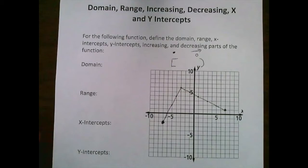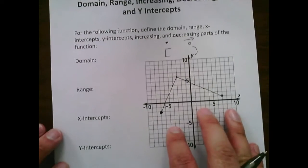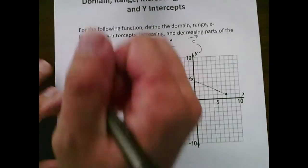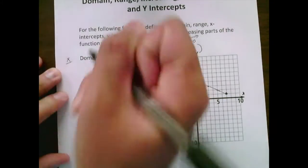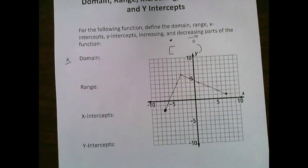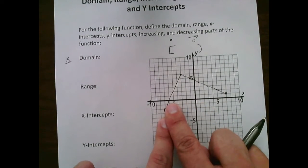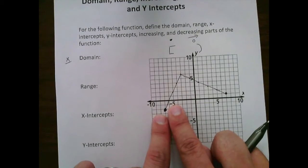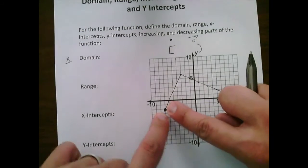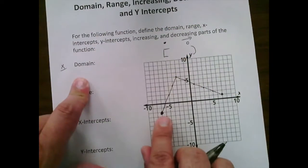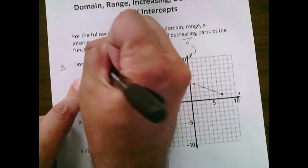Let's start with the domain. The domain only cares about the x-values — what are all the possible x-values this function takes in? On the left side, the leftmost we can go on the x-axis is negative 7, and that is a filled-in circle.